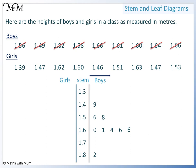Now we enter the girls' data from right to left, getting larger away from the stem. We start with heights starting with 1.3: we have 1.39. Now the values with 1.4: we have 1.46 and two 1.47s. We have 1.51 and 1.53. Finally, we have 1.60, 1.62, and 1.63.